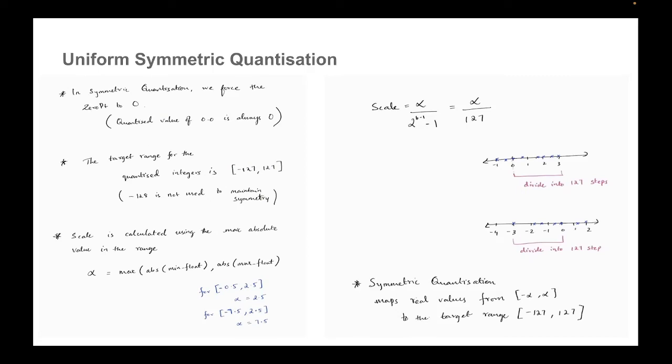Now that we have seen affine quantization, let's look at another technique called symmetric quantization, which is like a special case of affine quantization. So here there are a few points. One is we force the zero point to be zero, which means the real value zero is exactly represented as the integer zero. Another point is the mapping. The target range is not from minus 128 to 127, but it is from minus 127 to 127. This is to make sure there is a symmetry and we will see why this symmetry comes into play.